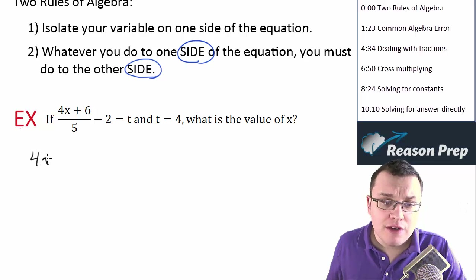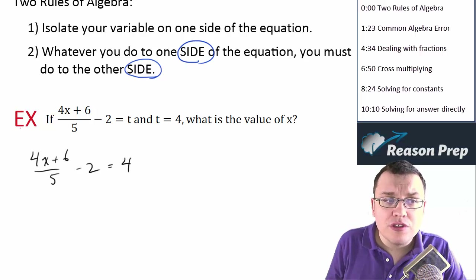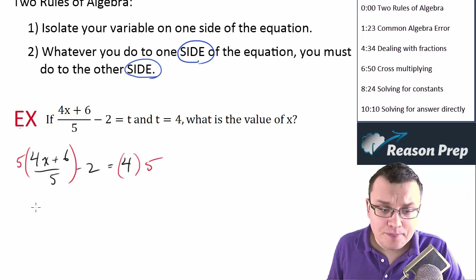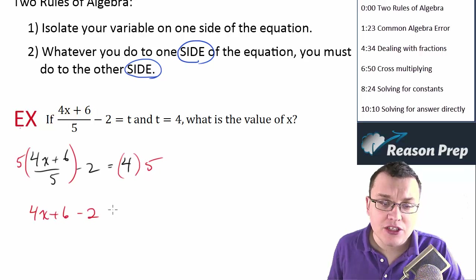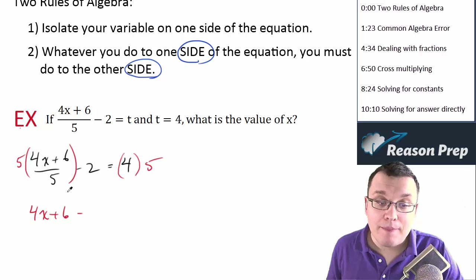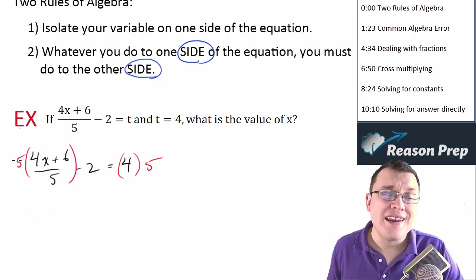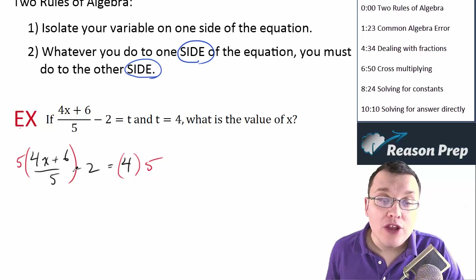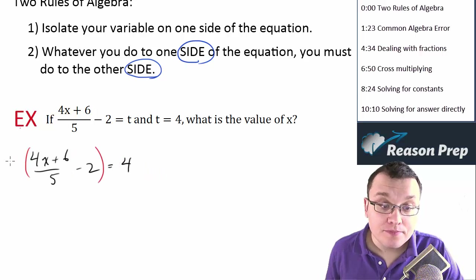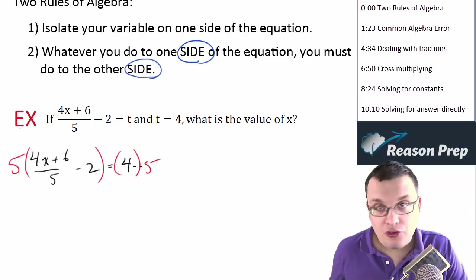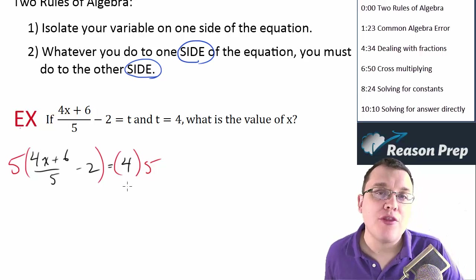Let's look at an example. We've got (4x + 6) / 5 minus 2 equals 4. What a lot of students do is they want to get rid of the 5 on the bottom, so they multiply this term by 5 and multiply the other side by 5. That gets them 4x + 6 minus 2 equals 20 — which is wrong. You cannot just multiply one piece of your equation by 5. When you multiply by 5, you do it to the entire side, so both terms get multiplied by 5.